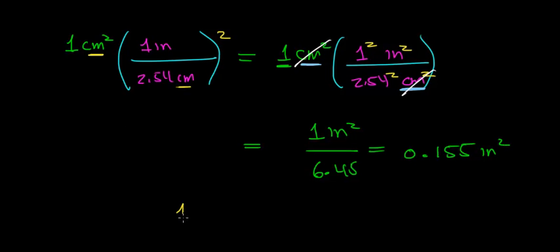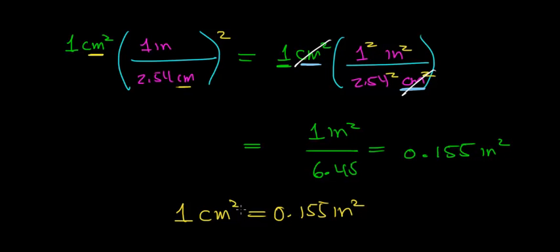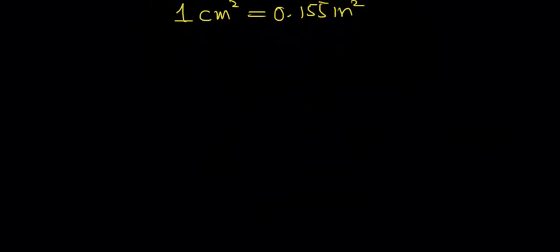To summarize: 1 centimeter squared is equal to 0.155 inches squared. One thing to keep in mind is that the unit of a square centimeter is much smaller than the unit of a square inch. In the last part of this video, let's develop some intuitive insight into what we just did.